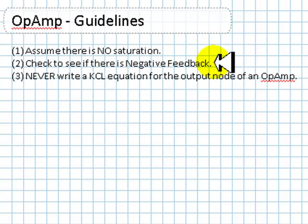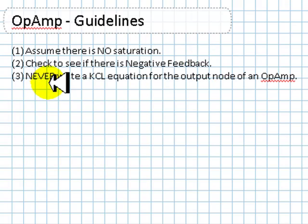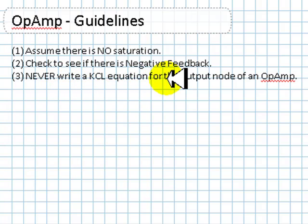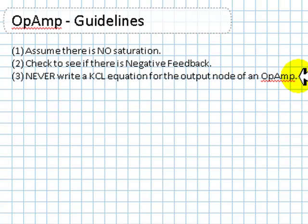Secondly, check to see if there is negative feedback in each one of the op-amps in your circuit. And third, never write a KCL equation for the output node of an op-amp. In class, we explained why not.